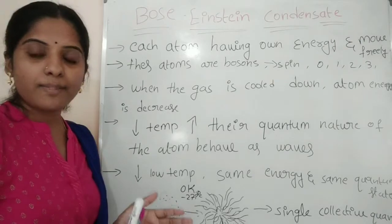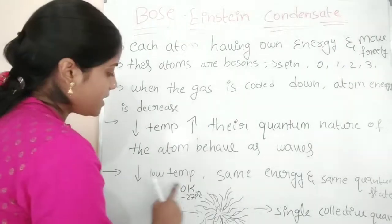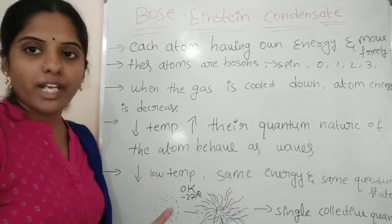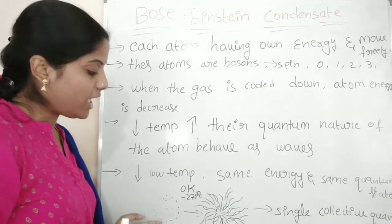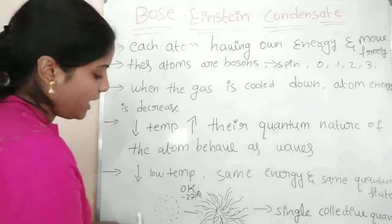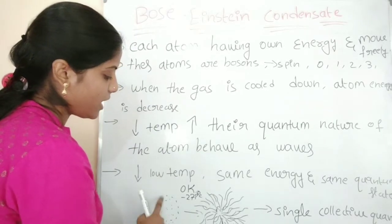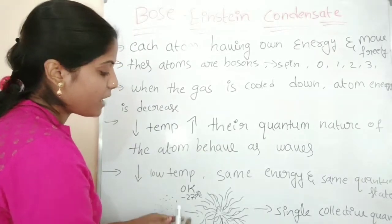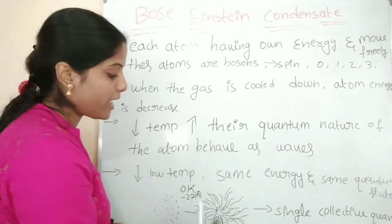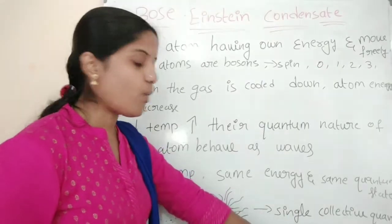Many atoms then behave like one wave. At very low temperature, atoms reach the same energy and the same quantum state. This is shown in the diagram — the gas particles all behave like one wave. We call this a single, collective quantum wave.